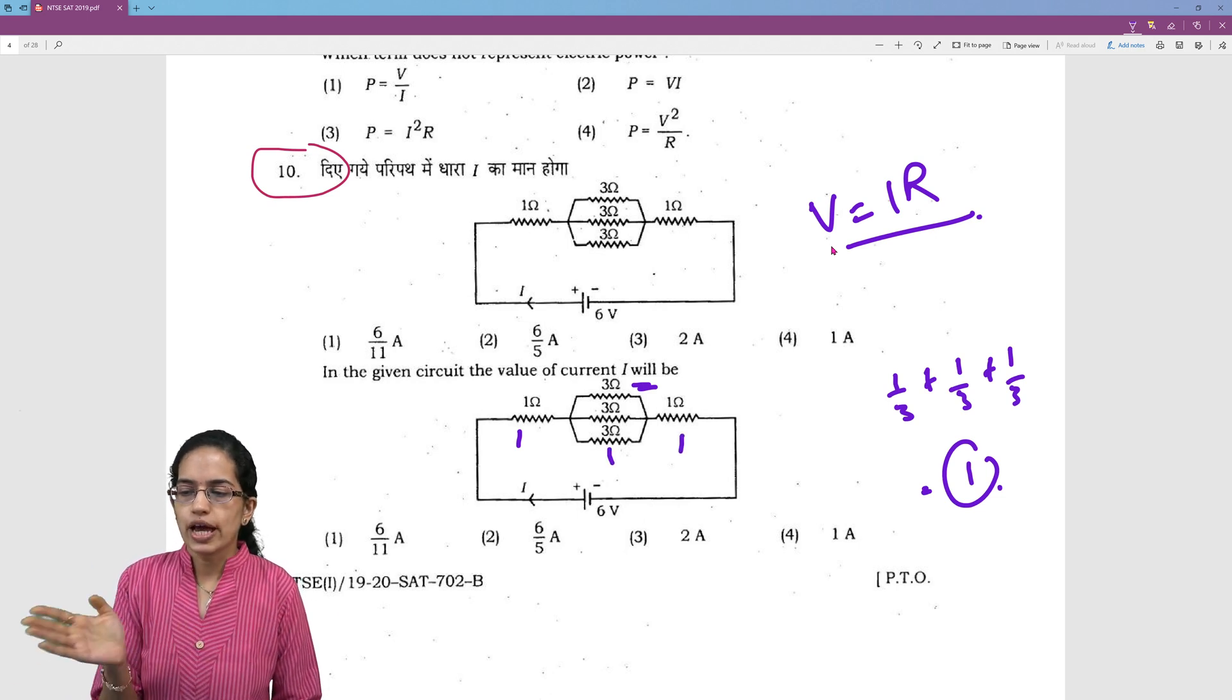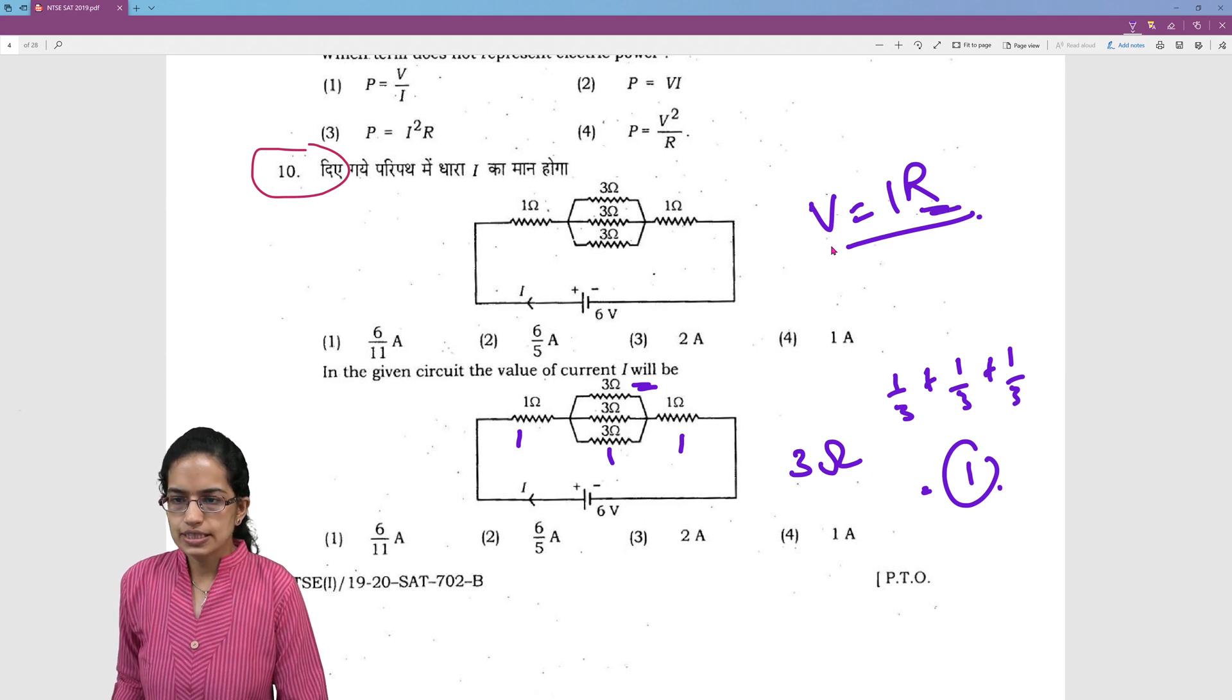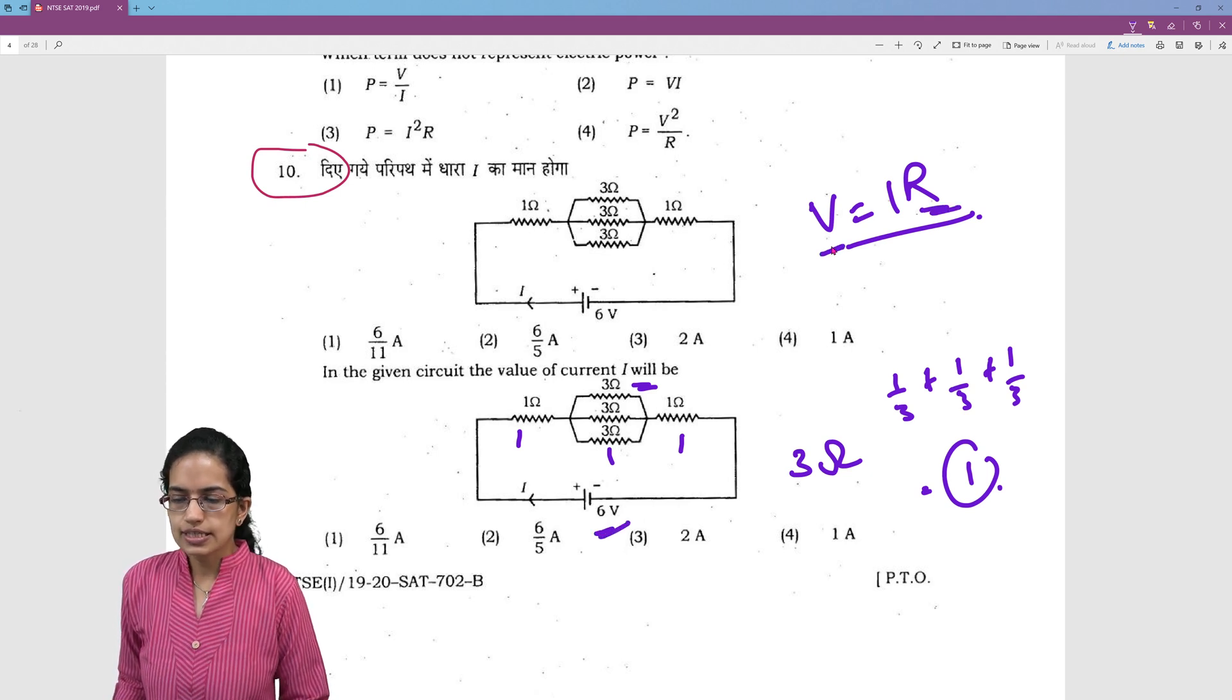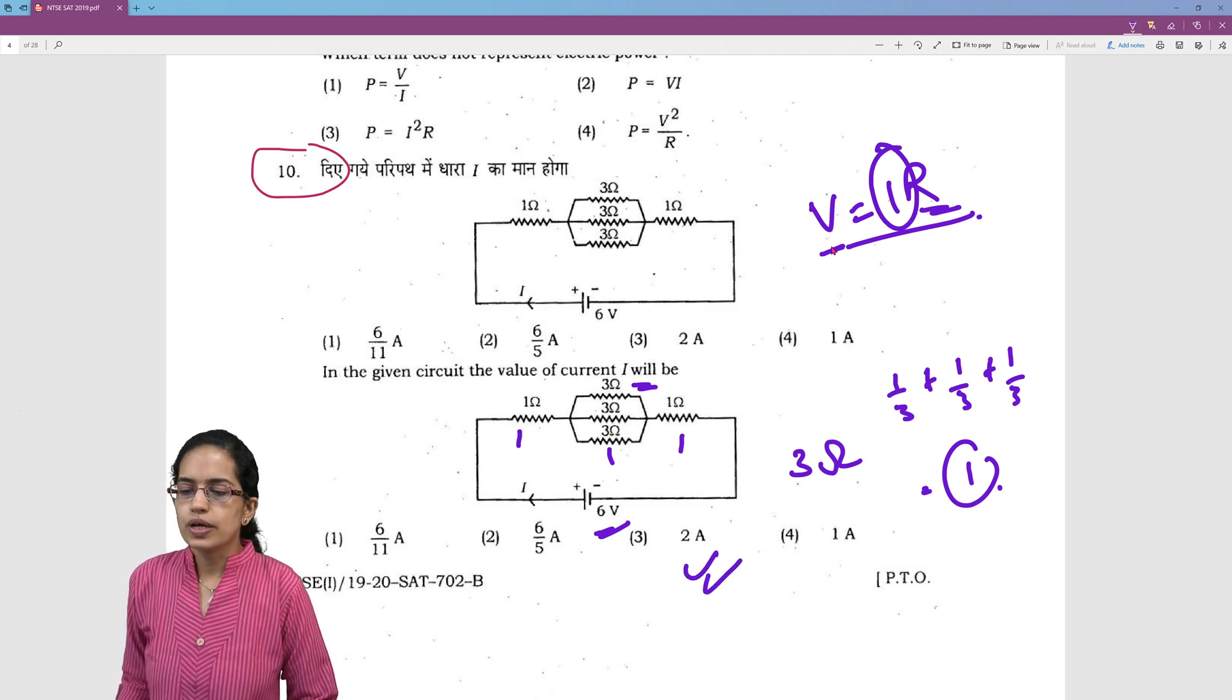1 and 1 in series. So I will add those. So this becomes 3 ohm. Now I have resistance as 3, voltage as 6. So I have the current that would be 2 ampere.